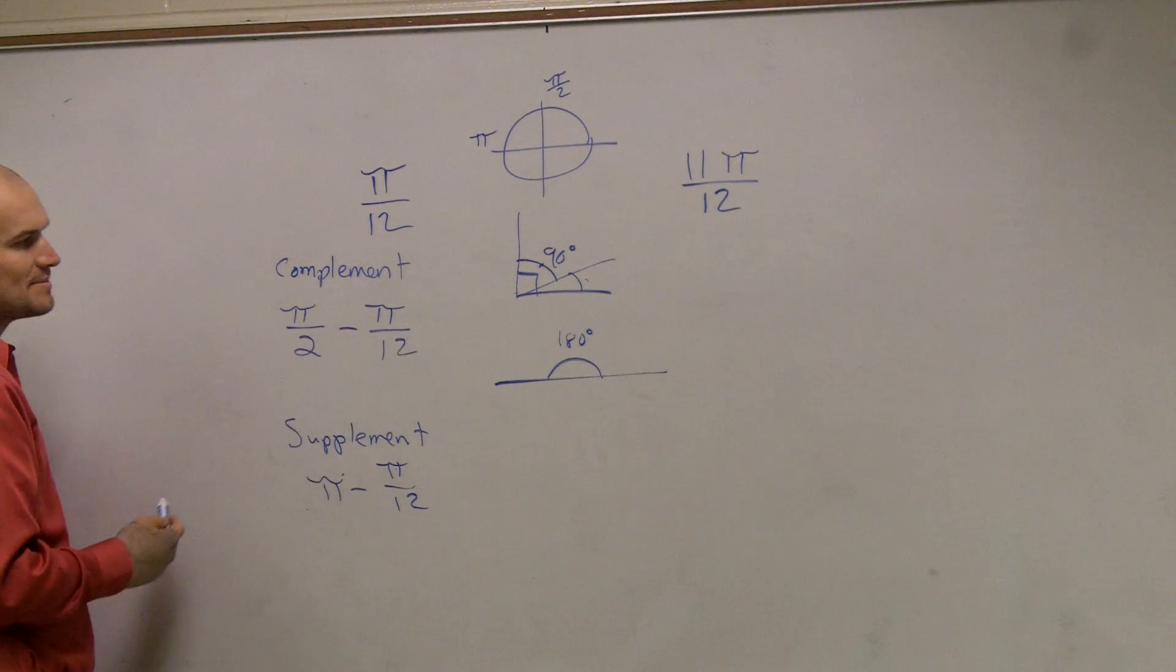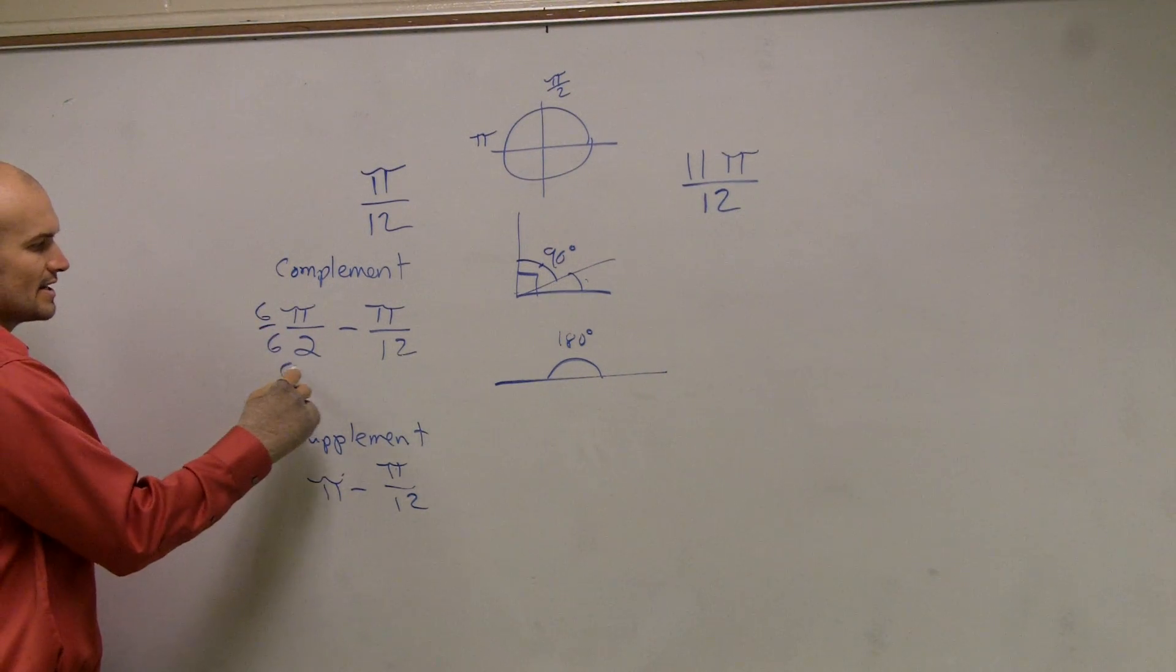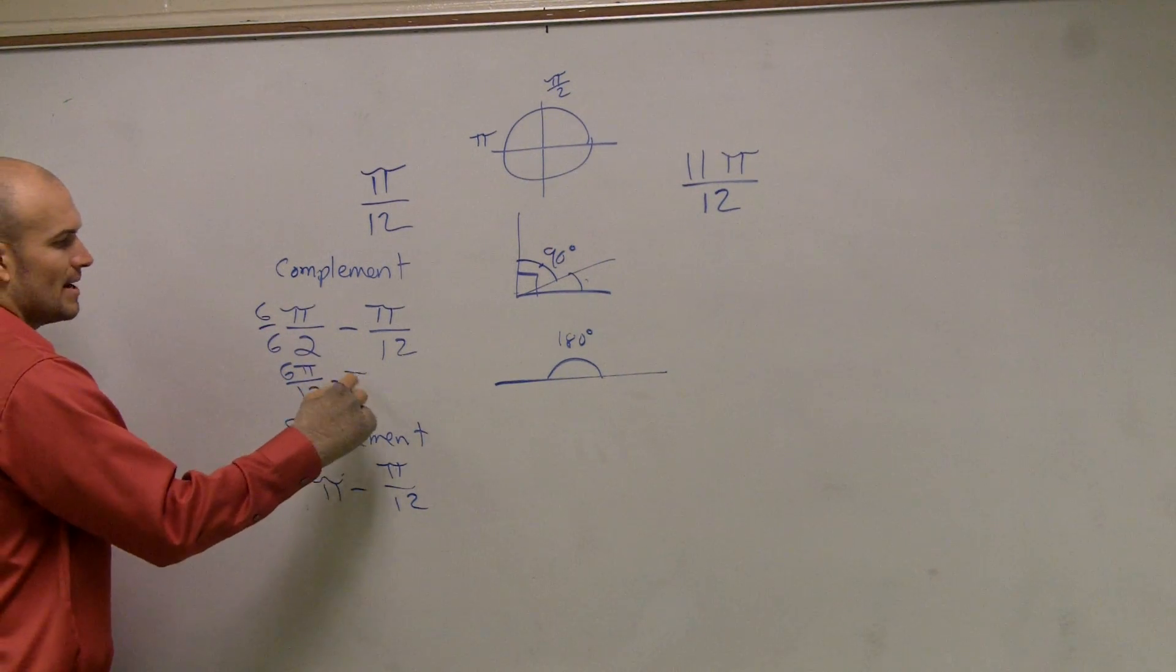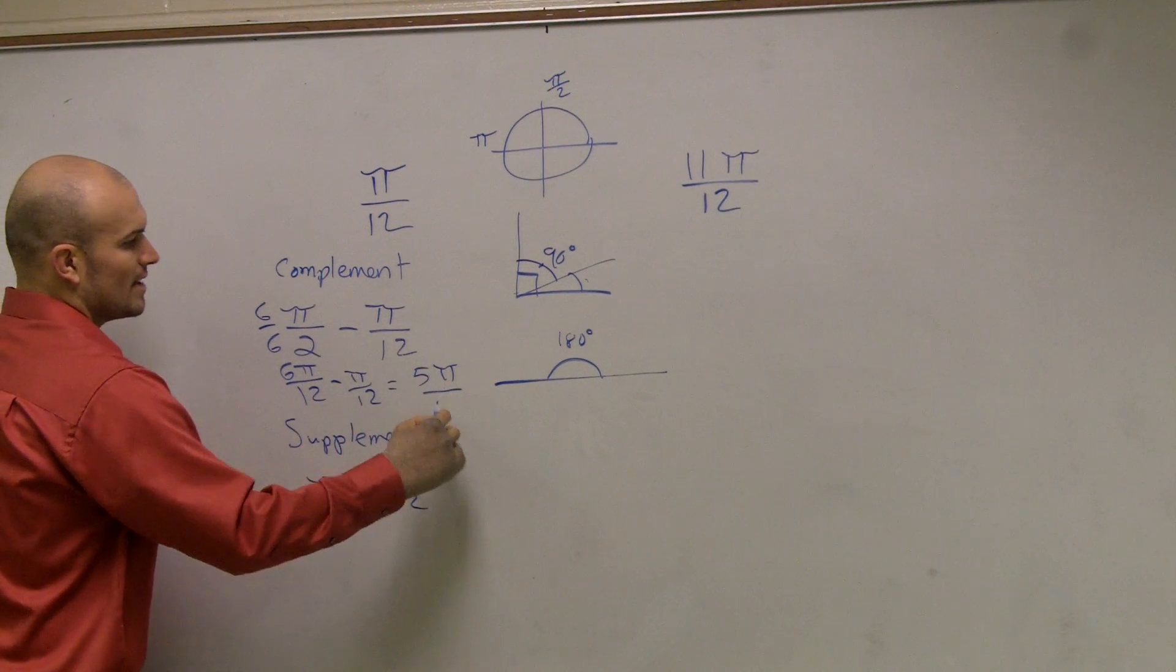So now, these don't have the same denominator, so I have to multiply by 6 over 6. So I get 6π over 12 minus π over 12 equals 5π over 12.